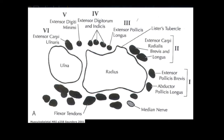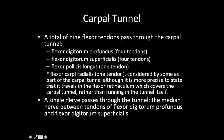The extensor carpi ulnaris will play a significant role in the triangular fibrocartilage complex in that its subsheath extends into and forms part of the TFCC. Along the volar aspect, we have the flexor tendons. We also have two important nerves: the median nerve and the ulnar nerve medially. Within the carpal tunnel, a total of nine flexor tendons pass — the four tendons of the flexor digitorum profundus, four tendons of the flexor digitorum superficialis, and the tendon of the flexor pollicis longus.